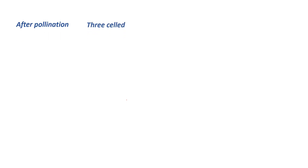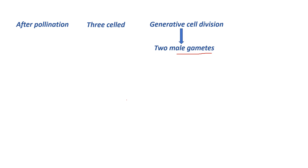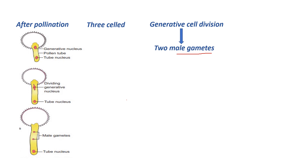The generative cell is lenticular or spindle-shaped and remains suspended in the cytoplasm of the vegetative cell. The vegetative cell is comparatively bigger and has food reserves. After pollination, the pollen grain passes to the three cell condition by division of the generative cell, which gives rise to the two male gametes. The tube nucleus degenerates after pollen tube germination in the stigma. This answers how and why there are two male gametes.